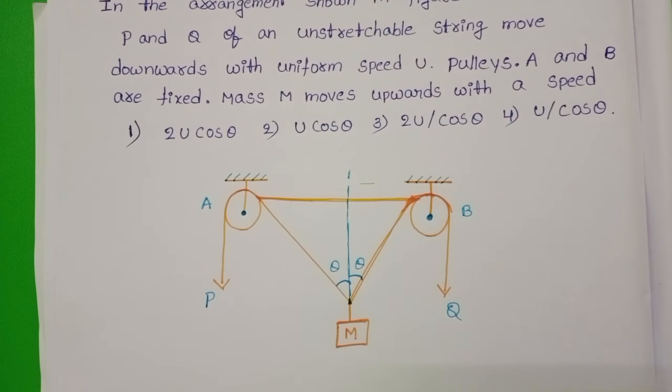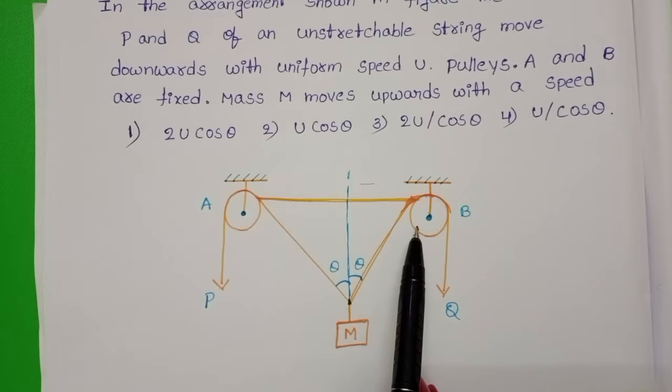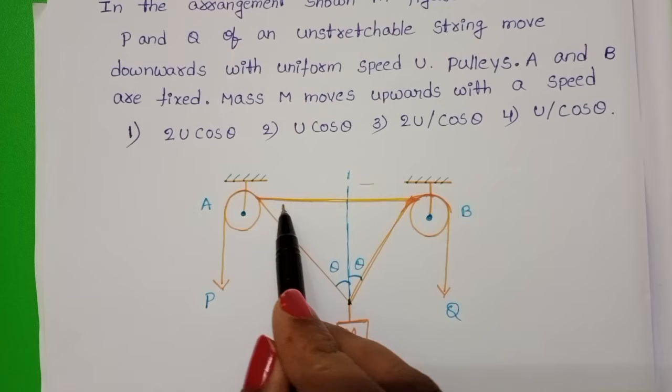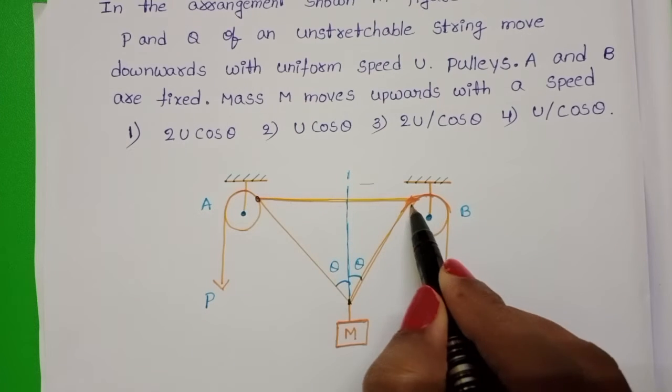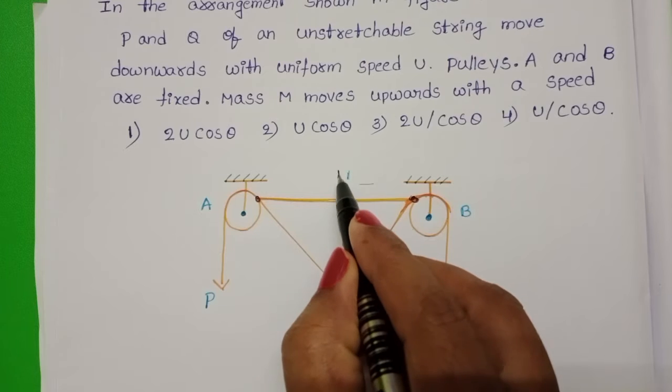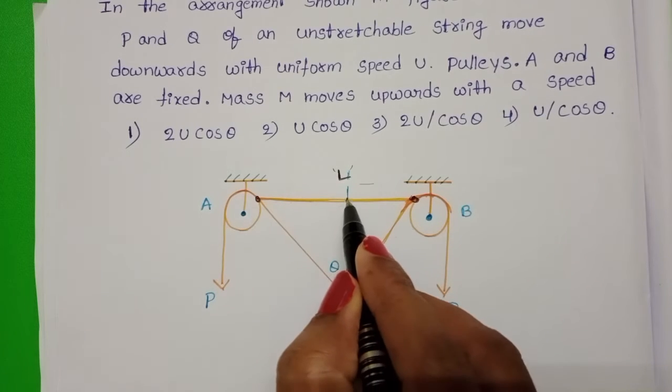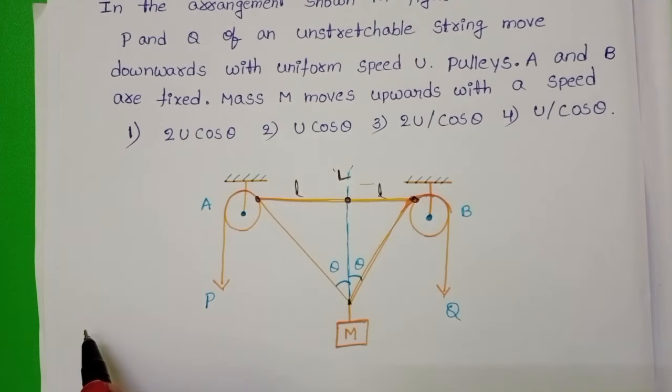So observe the given arrangement, these two pulleys are fixed in their positions. So there is no change in the position of the pulleys. The distance of separation between the pulleys is also constant. So let us take this distance with letter L. And from this point to here, take this length is L. Here also length is L.